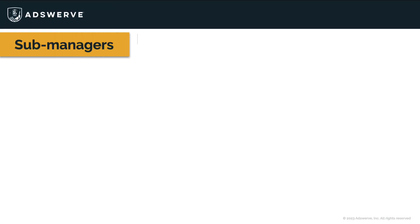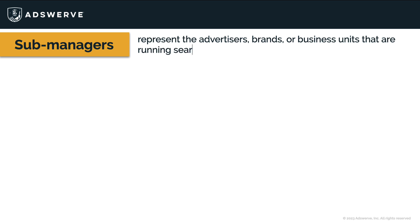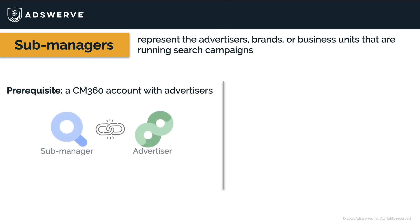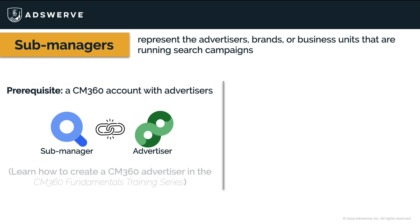Sub-managers represent the advertisers, brands, or business units that are running search campaigns. To use these, you'll need a CM360 account since sub-managers are linked to CM360 advertisers. We won't cover creating advertisers in this video because we have a video that covers that in our CM360 Fundamentals training series, but understand that you do need one before you can move forward with creating sub-managers.